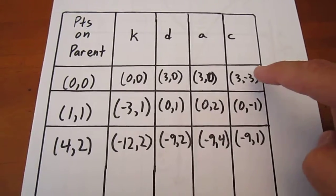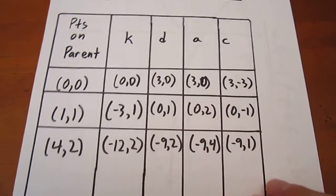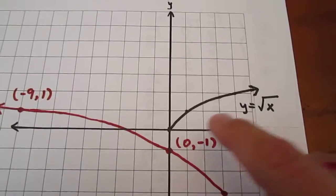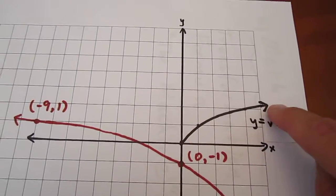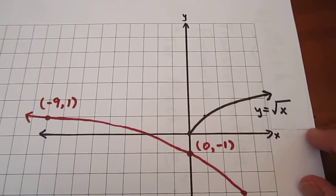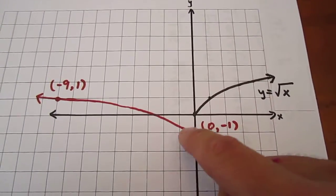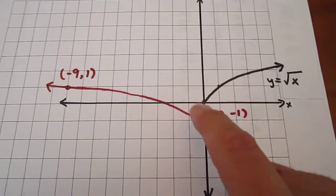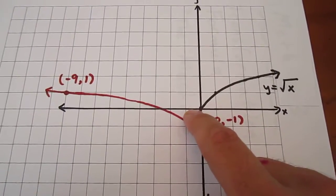What that does is it gives us 3 points on the function given, and now we go back and consider what that would look like. It's always good in these circumstances, although not vital, but it's not a bad idea, to graph the parent function, then to graph the points on the image curve.